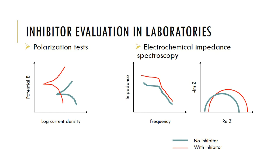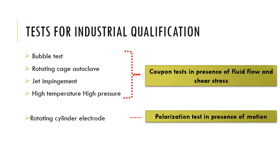Such electrochemical polarization testing may not always be done when inhibitors are qualified for use in an industrial environment. The typical tests for industrial qualification usually include bubble test, rotating cage, autoclave, jet impingement, and high temperature high pressure tests. These four are coupon tests where corrosion rates are measured, but the rates are measured in the presence of fluid flow and shear stress, taking into account fluid flow that happens in the internal regions of pipelines or similar equipment.